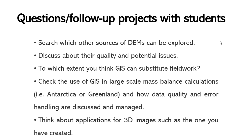It is interesting to see how data quality and error handling are discussed and managed in papers that show mass balance retreat in these large areas — they massively use satellite images and DEMs. Also, think about applications for the 3D images such as the one we created at the end, and see to which other applications within GIS this plugin we have shown in the last part of our project can be used.